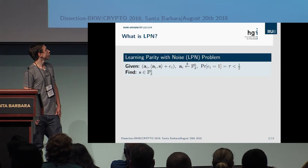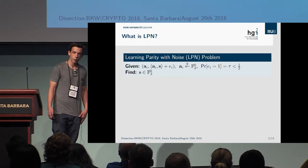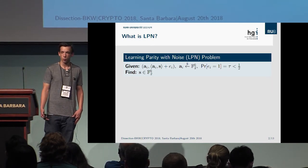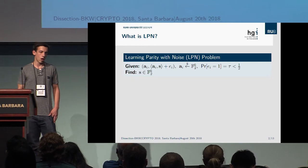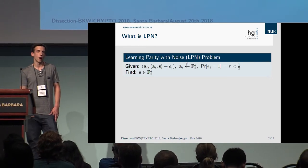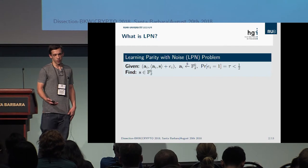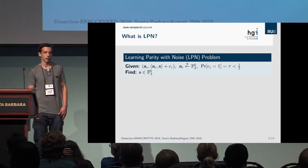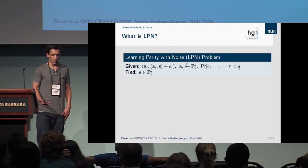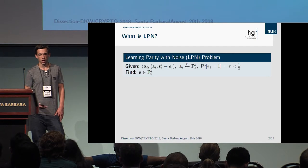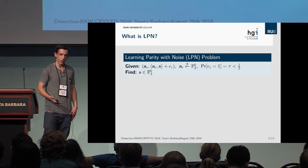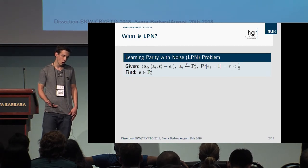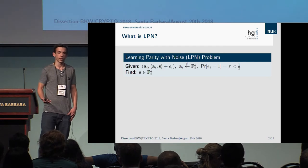Let's start with the definition of the problem we will focus on today — the learning parity with noise problem, or LPN problem. We are given an arbitrary amount of samples, where a sample consists of a randomly sampled vector from F2 to the K, together with a label. This label is the scalar product of these random vectors with a secret vector plus an error term. This error term is one with probability tau, strictly less than one half. The goal is to recover the secret vector S.